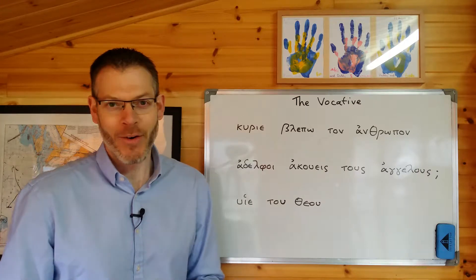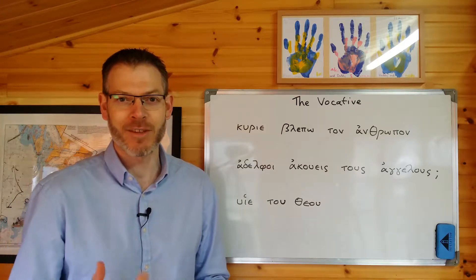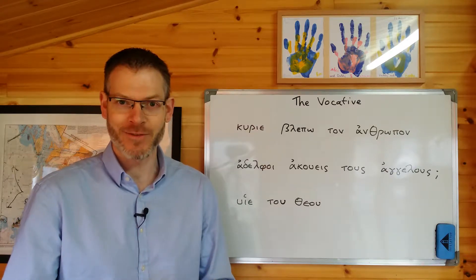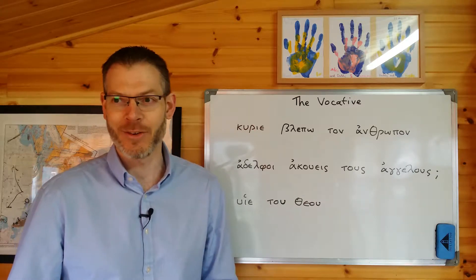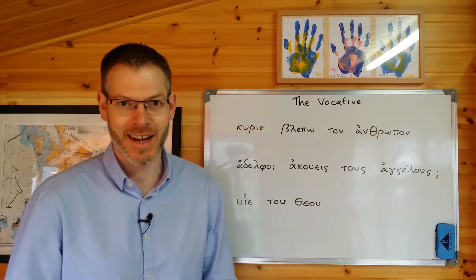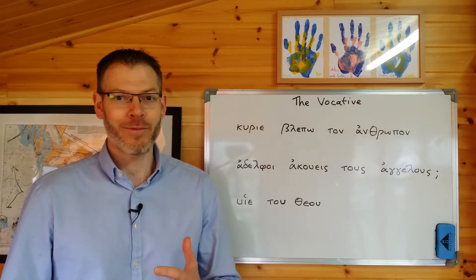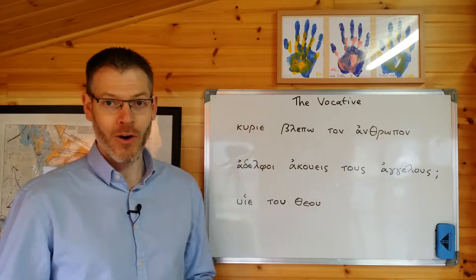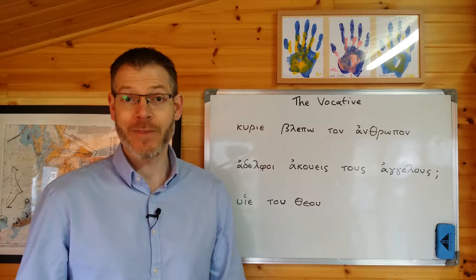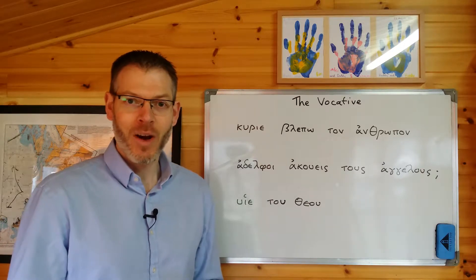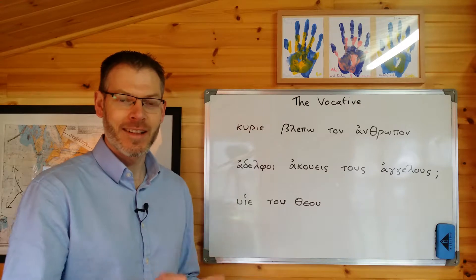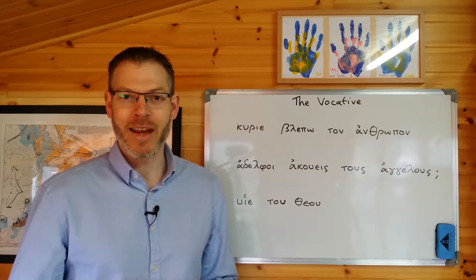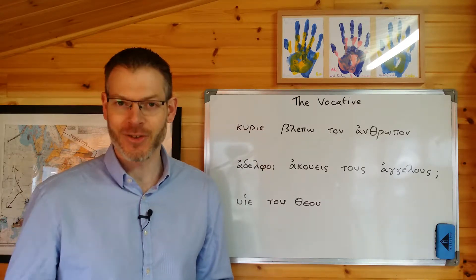Now, what tends to happen at this point, when we introduce a fifth case in Greek, is that some students start to roll their eyes and say, 'You said there were four cases — nominative, accusative, genitive, dative. Why are you introducing a fifth now? Is there going to be a sixth and seventh like in Latin?' The answer is no. This is the fifth and final one you're going to have to learn. The reason we don't include it in the normal list of four is because it's not really necessary — the plural is exactly the same in form as the nominative, so there's no need to repeat yourself.